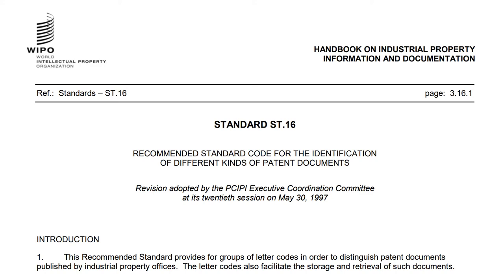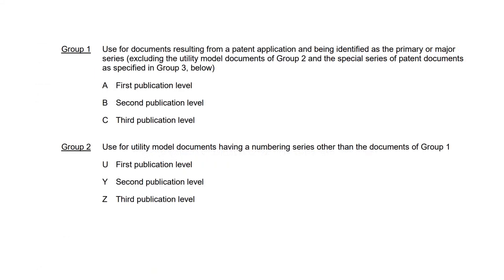The standard is published on WIPO's website. It recommends that standard documents resulting from a patent application and being identified as the primary or major series should be identified with letters: A for the first publication level, B for the second publication level, and C for the third publication level.